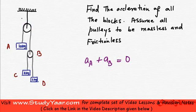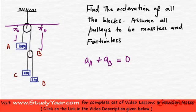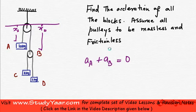If I take this as reference, this distance is XA and this is XB. XA plus XB equals L. Therefore, AA plus AB equals zero.